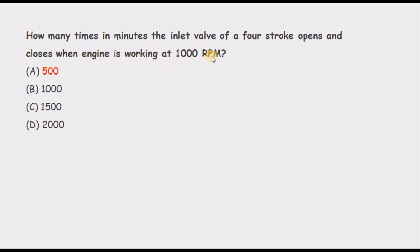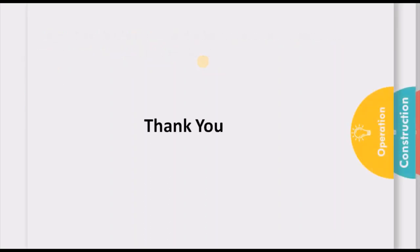How many times per minute does the inlet valve of a four-stroke engine open and close when the engine is working at 1000 rpm? At 1000 rpm the crankshaft rotates 1000 times per minute. Since in a four-stroke engine the valves open and close once every two crankshaft revolutions, the inlet valve opens and closes 1000 divided by 2 — that is 500 times per minute. That is about today's lecture, thank you.